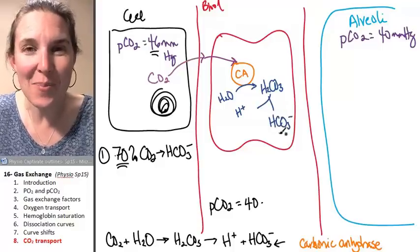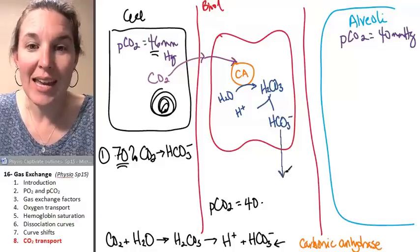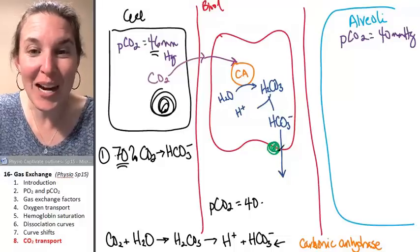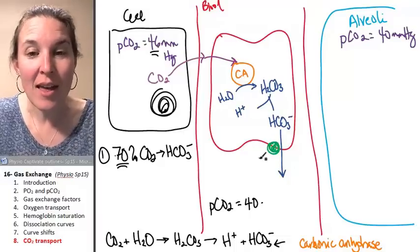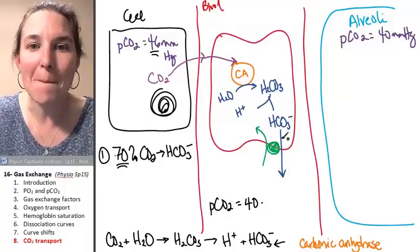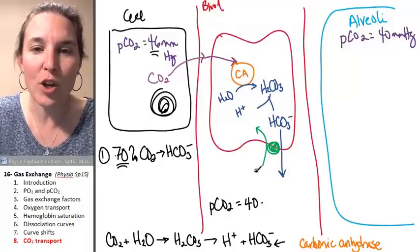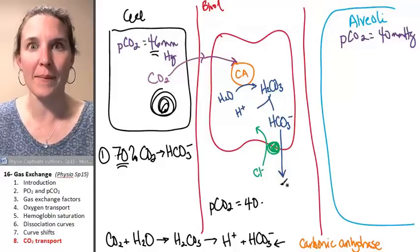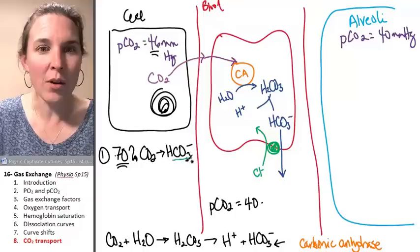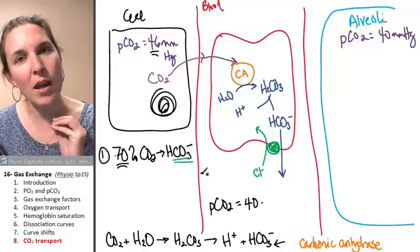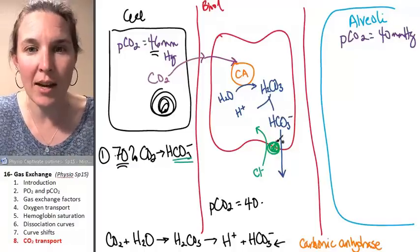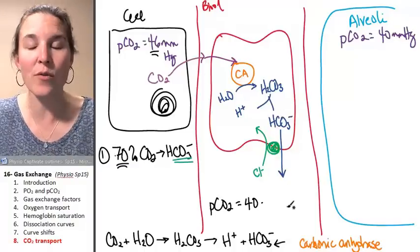And what happens to the bicarb? It's transported. This is so awesome. There's a transporter in the red blood cell that switches, trades, bicarbonate ions for chloride ions. Seriously? Yeah. So, chloride comes in, bicarb goes out, and now you have bicarb in your blood. Bicarbonate ions, 70% of our carbon dioxide got turned into bicarbonate ions, and now they're floating in the blood.